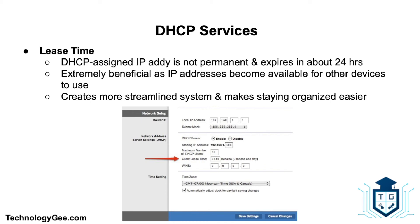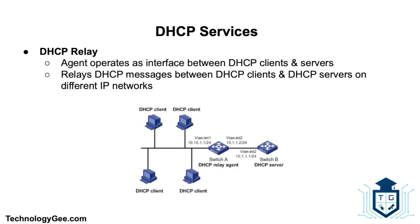A DHCP-assigned IP address is not permanent and typically expires in about 24 hours — this is referred to as the DHCP lease time. Unless modified from default settings, DHCP servers treat IP addresses as temporary, expiring after a set amount of time. This practice is beneficial as it makes IP addresses available for other devices when needed, creating a more streamlined and organized system.